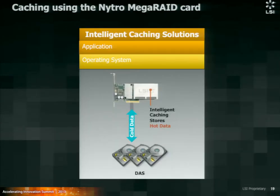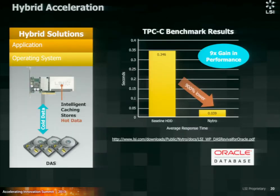So, intelligent caching using Nitro MegaRaid — this is intelligent caching in front of direct-attached storage. In an Oracle benchmark, we got a 9x performance gain by just implementing the intelligent caching in front of DAS. No DBA involvement and no database changes.